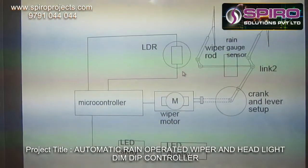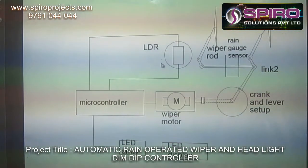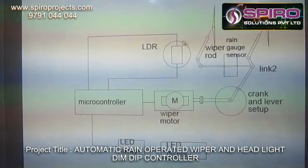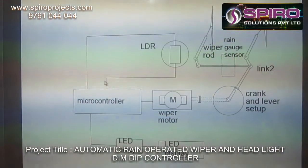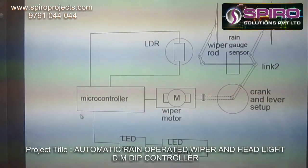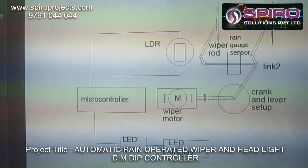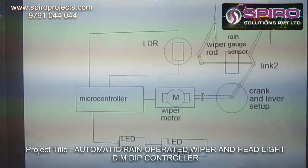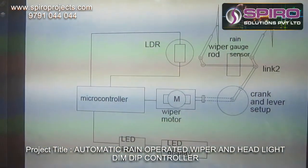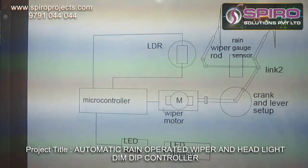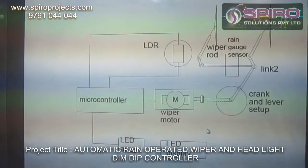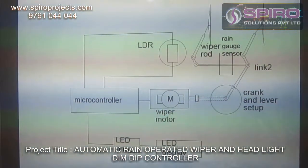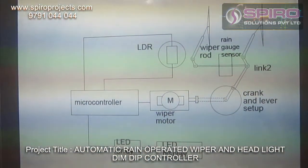The LDR sensor is used to detect the intensity of light coming from the opposite direction. It gives the signal to the Microcontroller. The Microcontroller activates the LED array. The LED array adjusts the display based on the frequency of the lights detected.